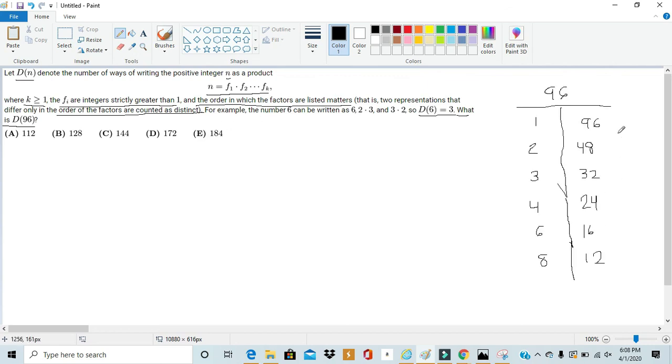So here I've listed all the factors of 96. So let's say for any of these factors, we want to express d(n). To start out with, we can't pick our first factor to be 1, because then that would mean f1 is equal to 1 in this notation. However, it says fi are integers strictly greater than 1, so 1 won't work. So we can just cross that off the list immediately.